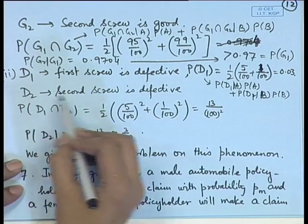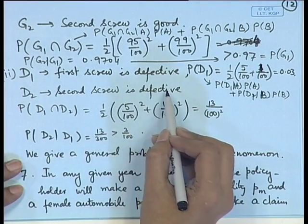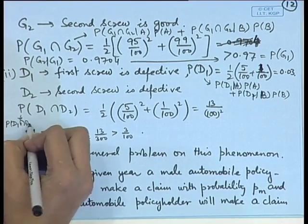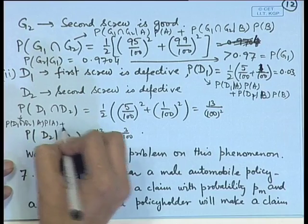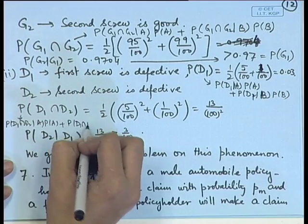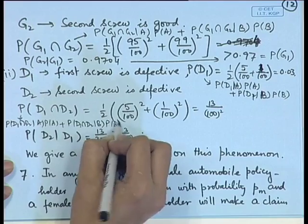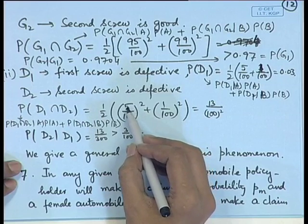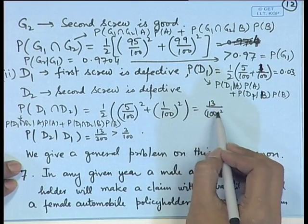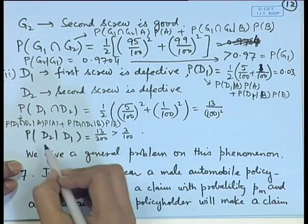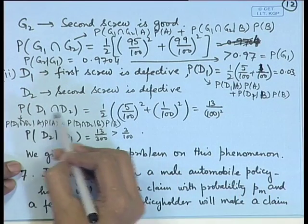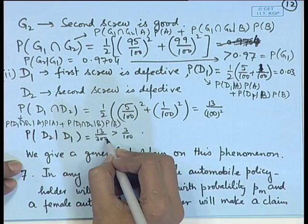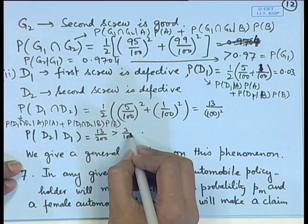If D2 is the event that the second screw is also defective, using the same representation: P(D1 ∩ D2) = half × (5/100)² + half × (1/100)² = half × 13 × (1/100)². So P(D2|D1) = P(D1 ∩ D2) / P(D1), which after simplification becomes 13/300 — clearly bigger than 3/100.